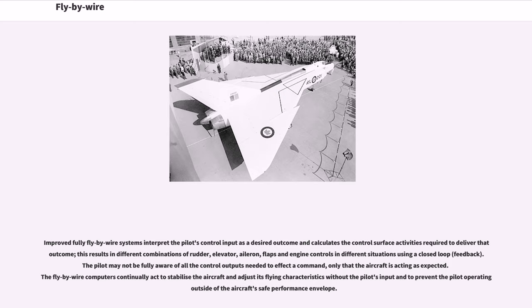This results in different combinations of rudder, elevator, aileron, flaps and engine controls in different situations using closed-loop feedback. The pilot may not be fully aware of all the control outputs needed to affect a command, only that the aircraft is acting as expected. The fly-by-wire computers continually act to stabilize the aircraft and adjust its flying characteristics without the pilot's input, and to prevent the pilot operating outside of the aircraft's safe performance envelope.